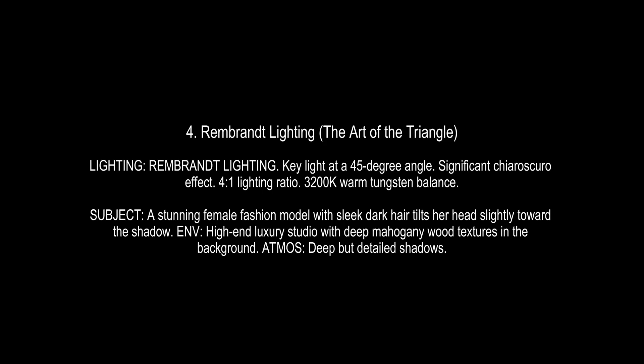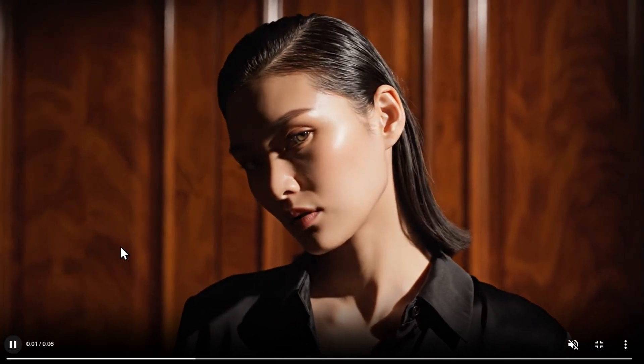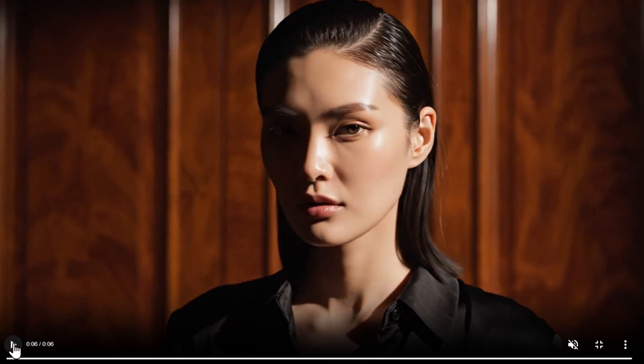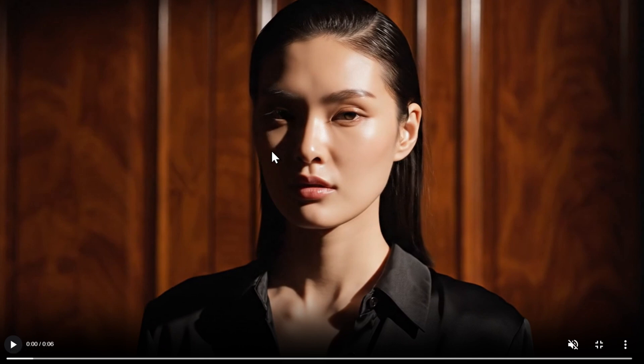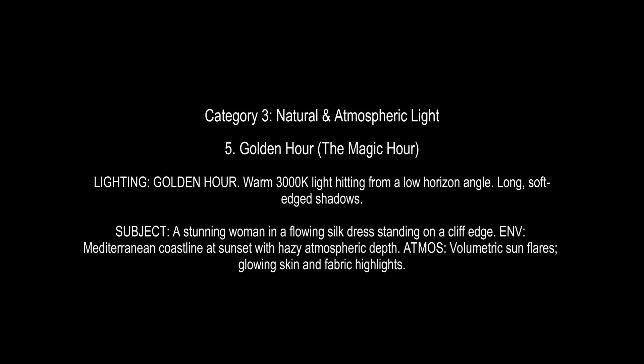Then we have Rembrandt lighting, which creates a signature small triangle of light on the shadowed cheek. It's used a lot in dramatic thrillers and prestige dramas. Look closely — here is that famous triangle, used a lot in cinematography and now it can be used in AI filmmaking.